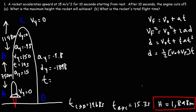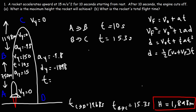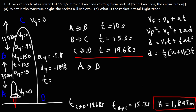To calculate the total flight time, we add up all three segments: 10 seconds from A to B, plus 15.3 seconds from B to C, plus 19.68 seconds from C to D equals 44.98 seconds, which we can round to approximately 45 seconds. That is the rocket's total flight time.